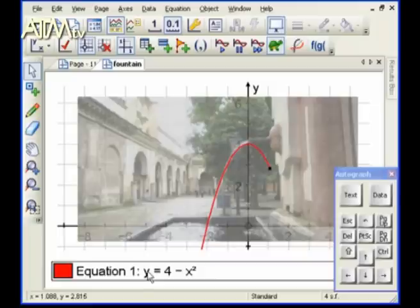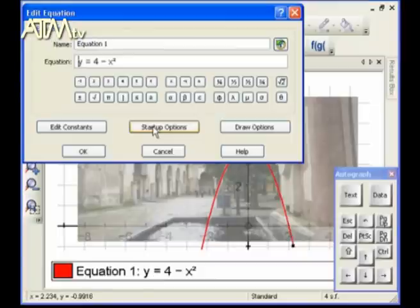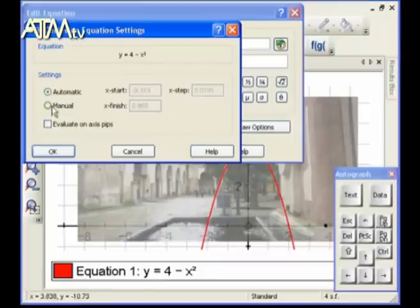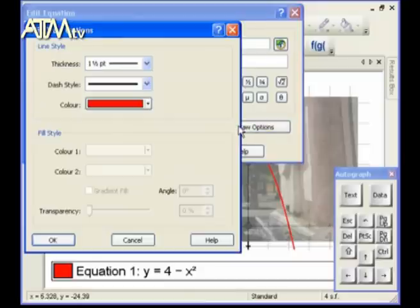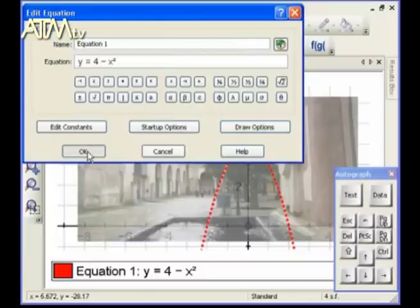Let's see. So it might be nice to actually look at the start-up options for this. And do a manual from zero. And so it's now only going to plot the right-hand side. And let's draw options. Let's do, say, that and make them a bit thicker. And off we go.